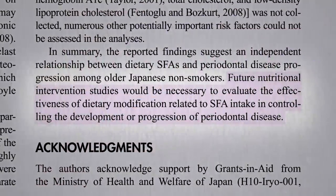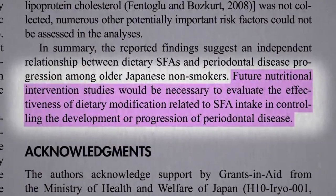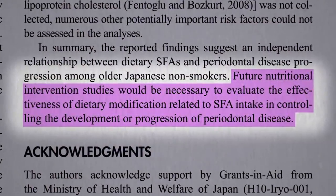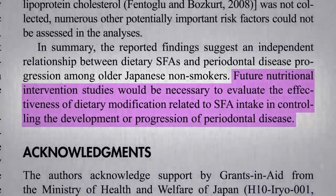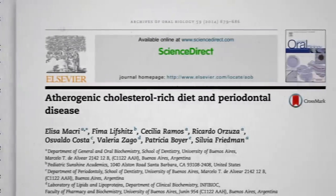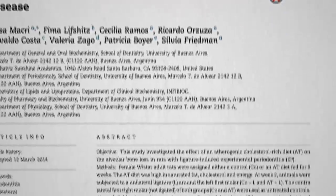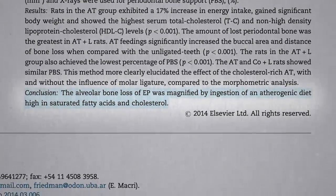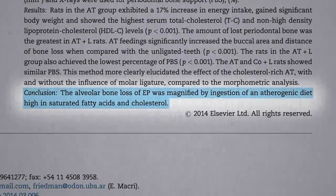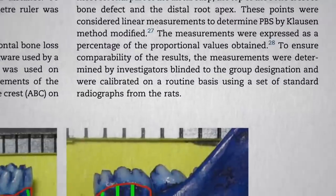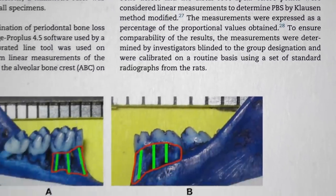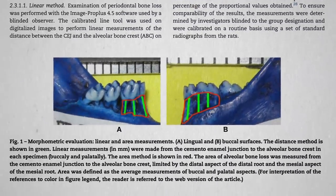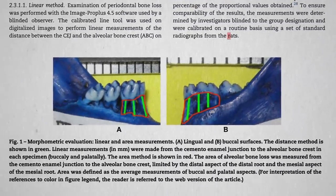The only way to know for sure, though, is to do an interventional trial where you change people's diets and see what happens. In other words, you have to put it to the test. Bone loss was indeed magnified by a diet high in saturated fat and cholesterol — but if you're thinking that's a weird-looking jaw, that's because it was a study done on rats.